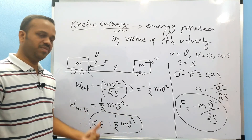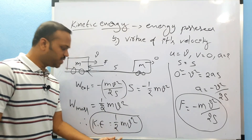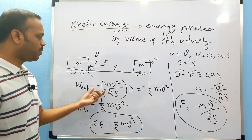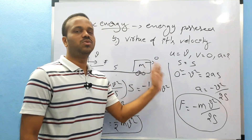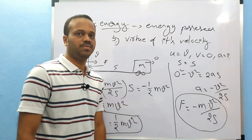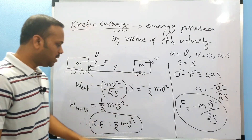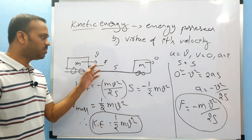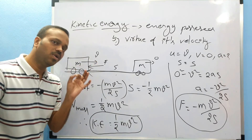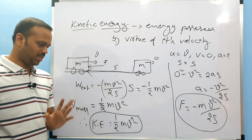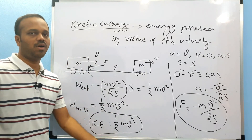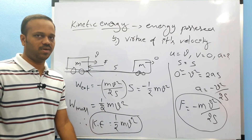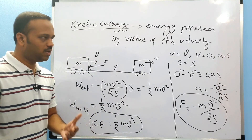The kinetic energy is half MV squared. Superman does this work to bring the car to zero velocity, and that is why the kinetic energy possessed by the mass is half MV squared. Got it?